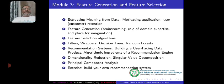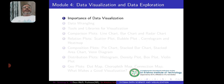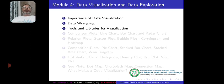Solving the recommendation system problem helps us realize what we covered across the first three modules. Then getting to the fourth module, titled 'Data Visualization and Data Exploration,' we start with the importance of visualization of data and why we require data wrangling, look at the various tools and libraries available for visualization, and then begin looking at various types of plots.